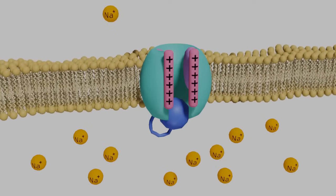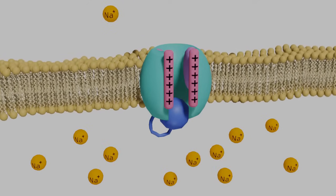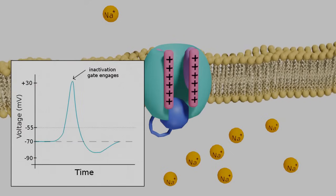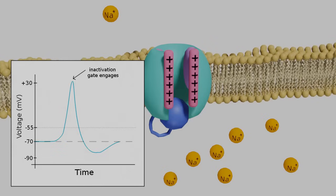The inactivation gate will engage just around the peak of the action potential graph, which marks the beginning of the absolute refractory period.